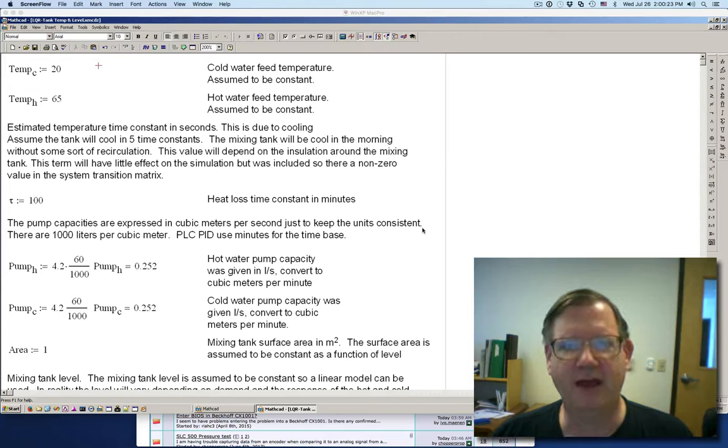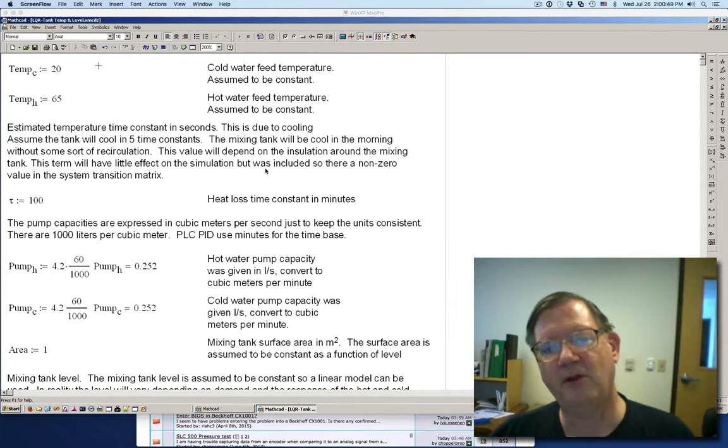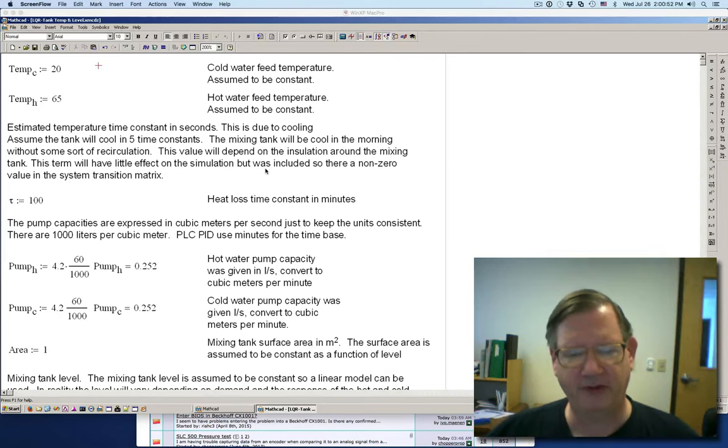This application is a temperature control and level control, and what we're trying to do is control both. There's a hot water pump and a cold water pump, and the goal is to try to maintain a level and a temperature as demand on the water coming out of the mixing tank changes. The goal is to keep the tank full at about one meter level, and I'm assuming it's got a surface area of one meter, so that's one cubic meter. The temperature is supposed to be at 40 degrees centigrade.